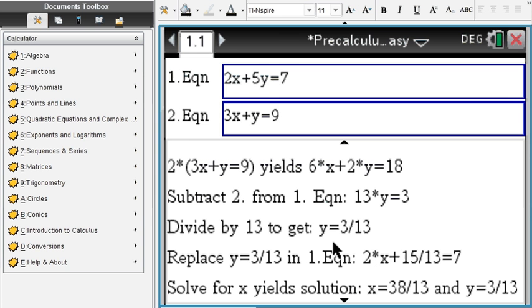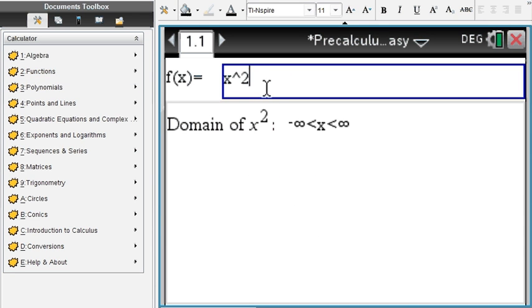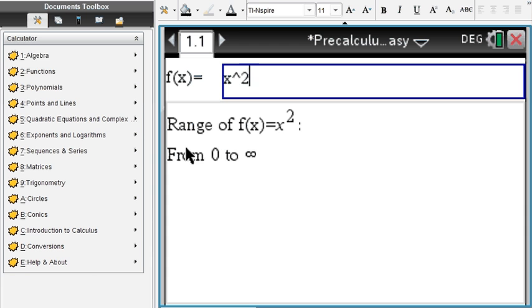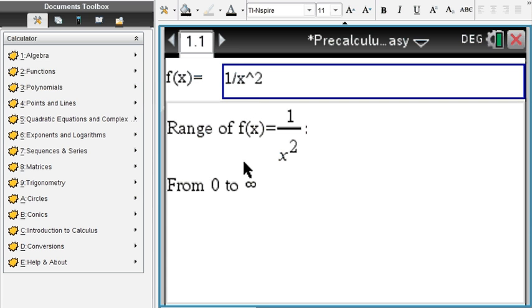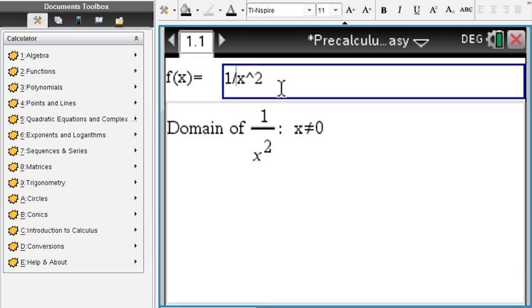You can switch between formats very easily, no need to press enter. For functions, you can find the domain of x². That is any x value between negative infinity and positive infinity. How about finding the range of x²? That's anything between 0 and infinity. What about 1 over x²? The range is still 0 to infinity, but the domain is now anything but 0, which is perfectly correct.